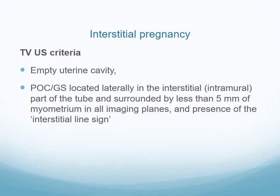For interstitial pregnancy, we see an empty uterus, a product of conception or gestational sac located laterally in the interstitial or intramural part of the tube, surrounded by less than 5mm of myometrium, and the presence of the interstitial line sign.